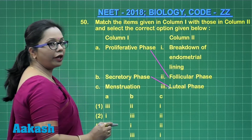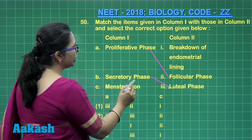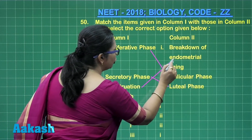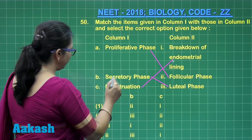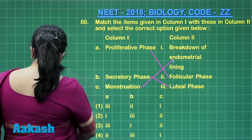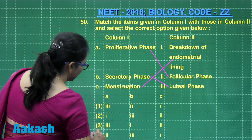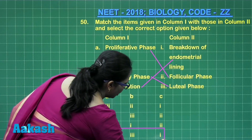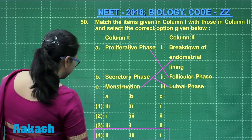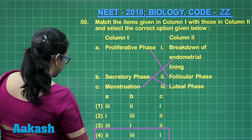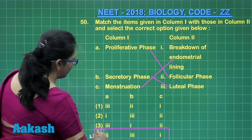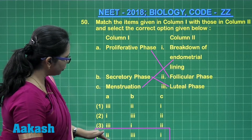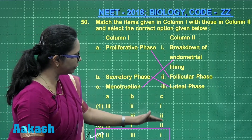Menstruation is when menstrual bleeding occurs; the reason for it is the breakdown of the endometrial lining. Matching these, the correct answer is option four: A matches with 2, B with 3, and C with 1.